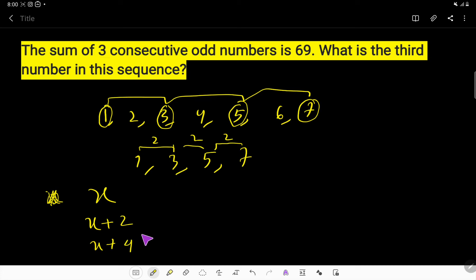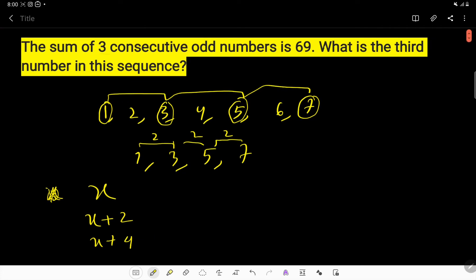Just you have to add two here, because if you deduct x plus 4 minus x plus 2, then the difference will be two. So these are the probable three consecutive odd numbers. According to the condition of this math, the sum of these three consecutive odd numbers will be 69. That is, x plus x plus 2 plus x plus 4 will be equal to 69.